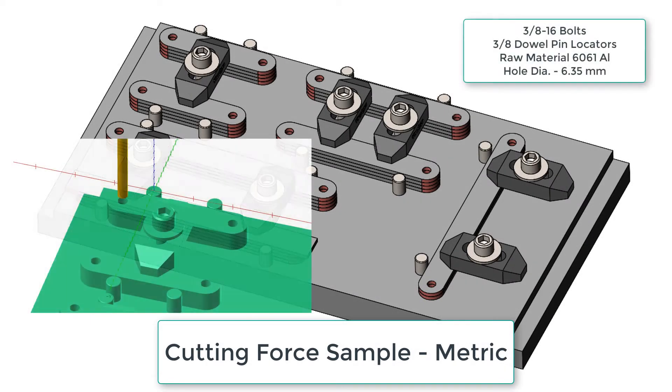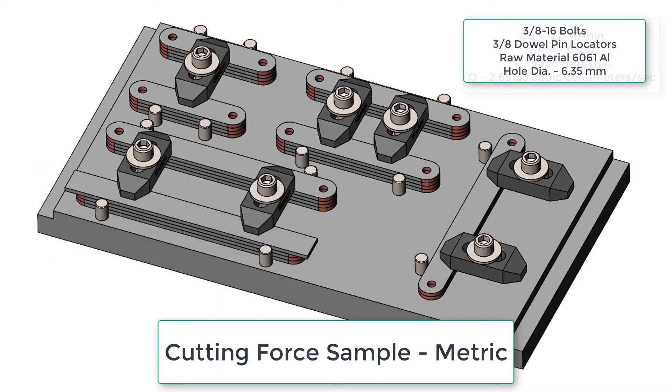In this video we're going to look at how to calculate some drilling cutting forces in metric. The holes being drilled are 6.35 millimeters and the raw material is 6061 aluminum and the cutting tool is high speed steel.